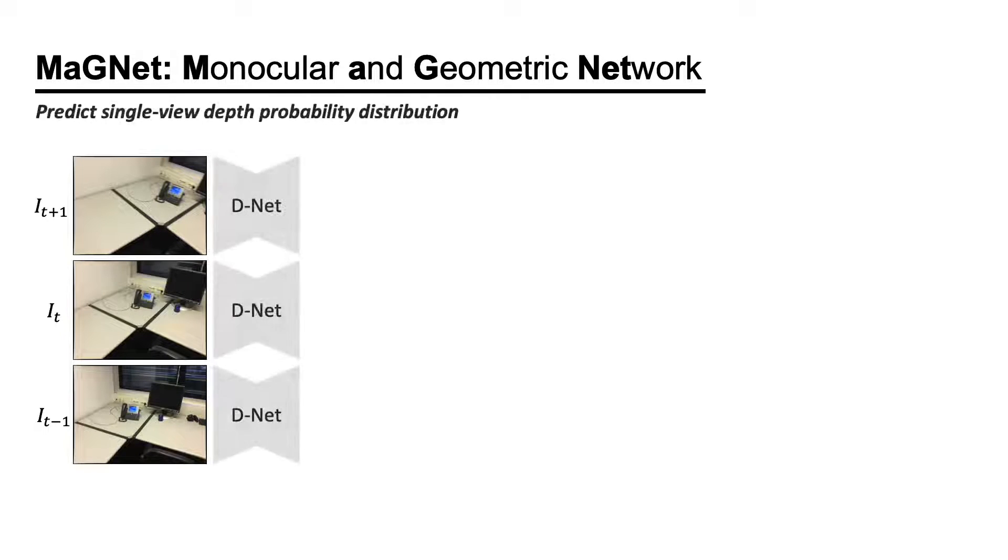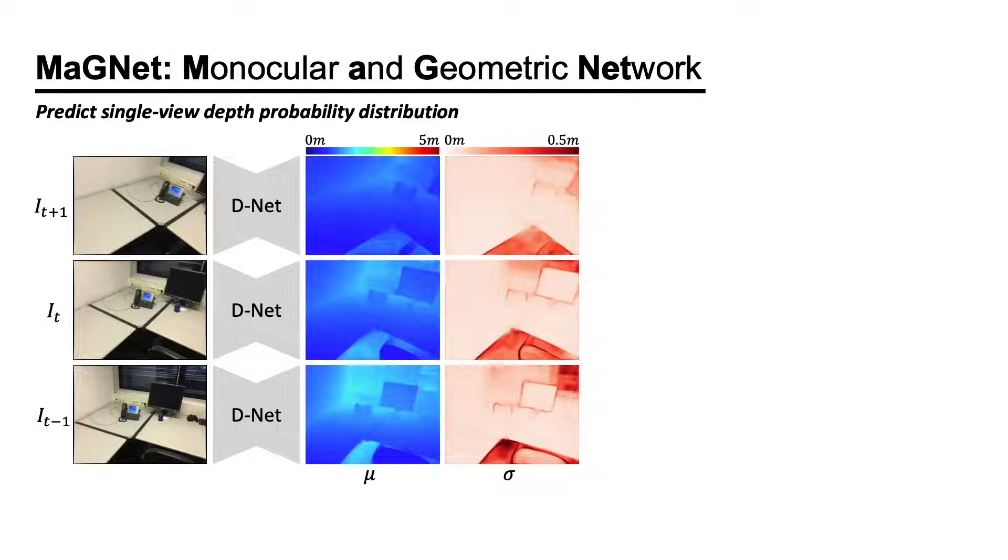To get the best of both worlds, we introduce MaGNet, Monocular and Geometric Network. We use a pre-trained network to estimate the single-view depth probability distribution, parametrized as a per-pixel Gaussian of mean and variance. Our goal is to fuse these single-view predictions with multi-view geometry.